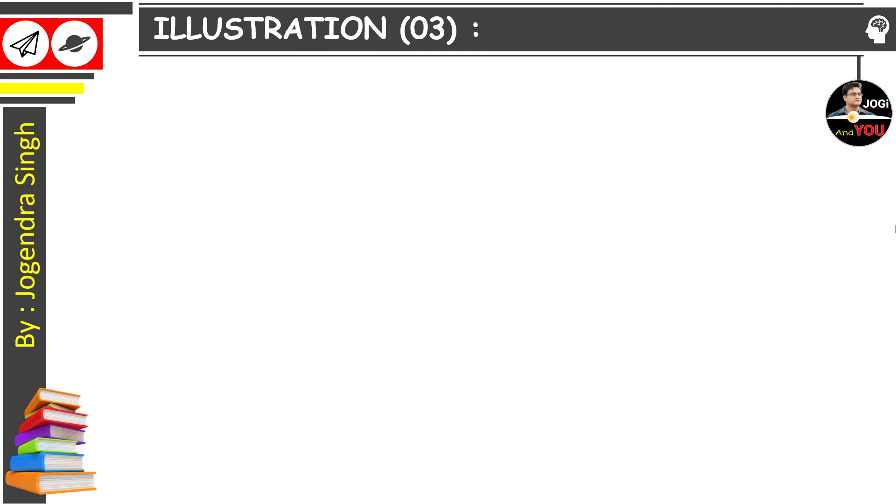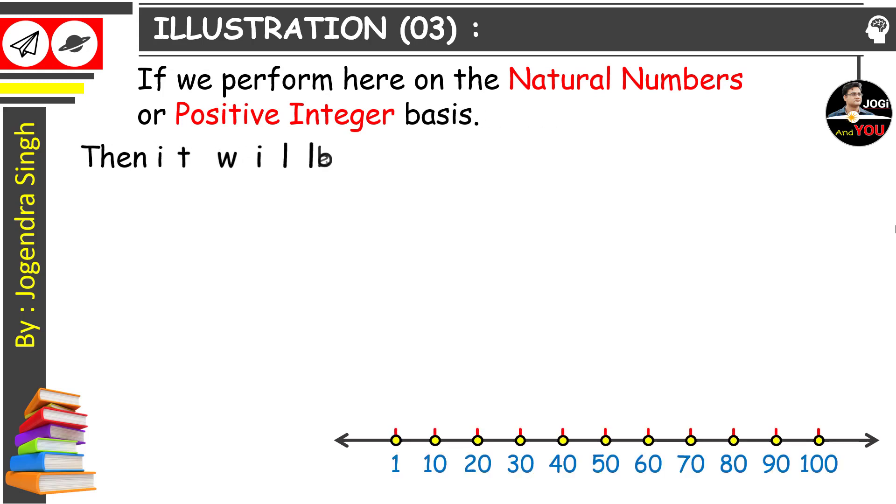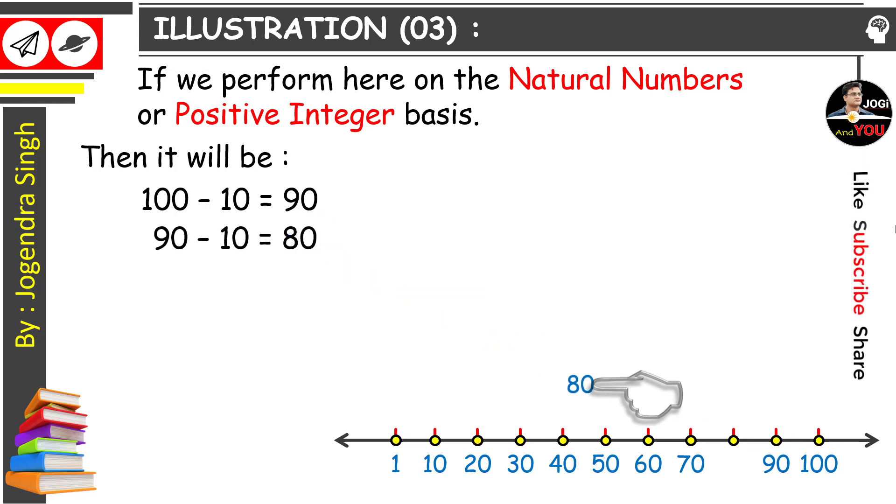The illustration number 3 is as follows. If we perform here on the natural number or positive integer basis, then it will be 100 minus 10 equals 90. 100 goes here and 90 will be here. So 90 minus 10 equals 80. 80 minus 10 equals 70. 70 minus 10 equals 60.